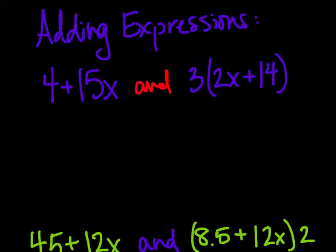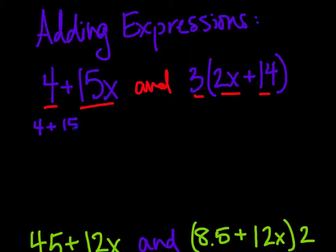For example, we have 4 + 15x and 3(2x + 14). We can add these two expressions, so we would do that by writing 4 + 15x + 3(2x + 14).